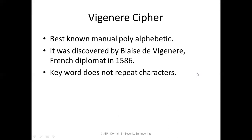We had an illustration of that in a previous video. In the last video we looked at the Playfair cipher, which uses a 5x5 key matrix where I is replaced by J, and the plaintext is divided into letter pairs with a Z inserted between identical pairs.